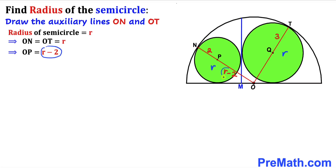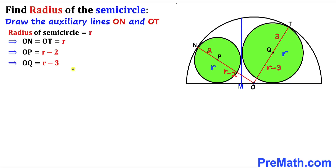Now let's focus on the other green circle. We know its radius is three units, so therefore the length OQ is going to be r minus 3. Thus our distance OQ is r minus 3.